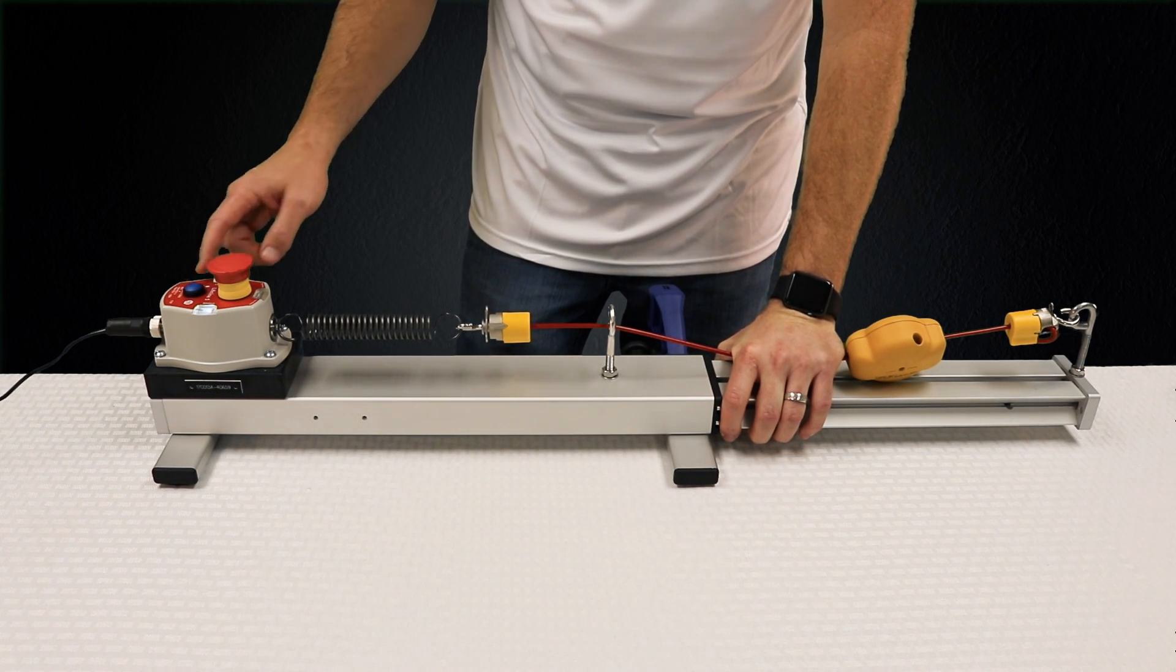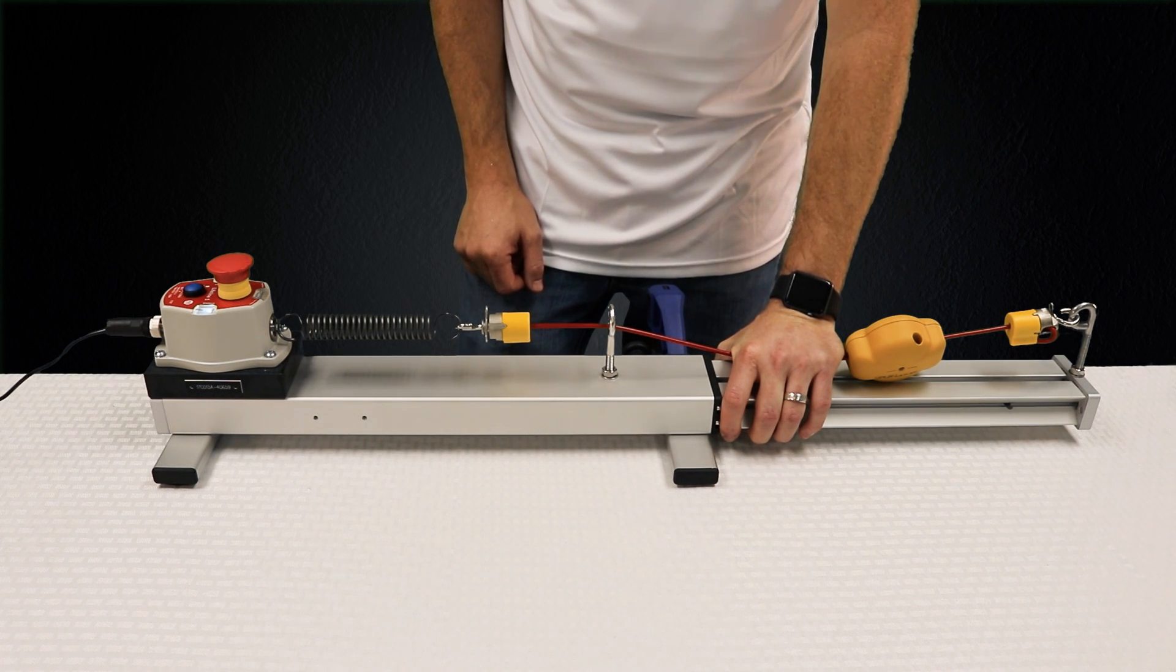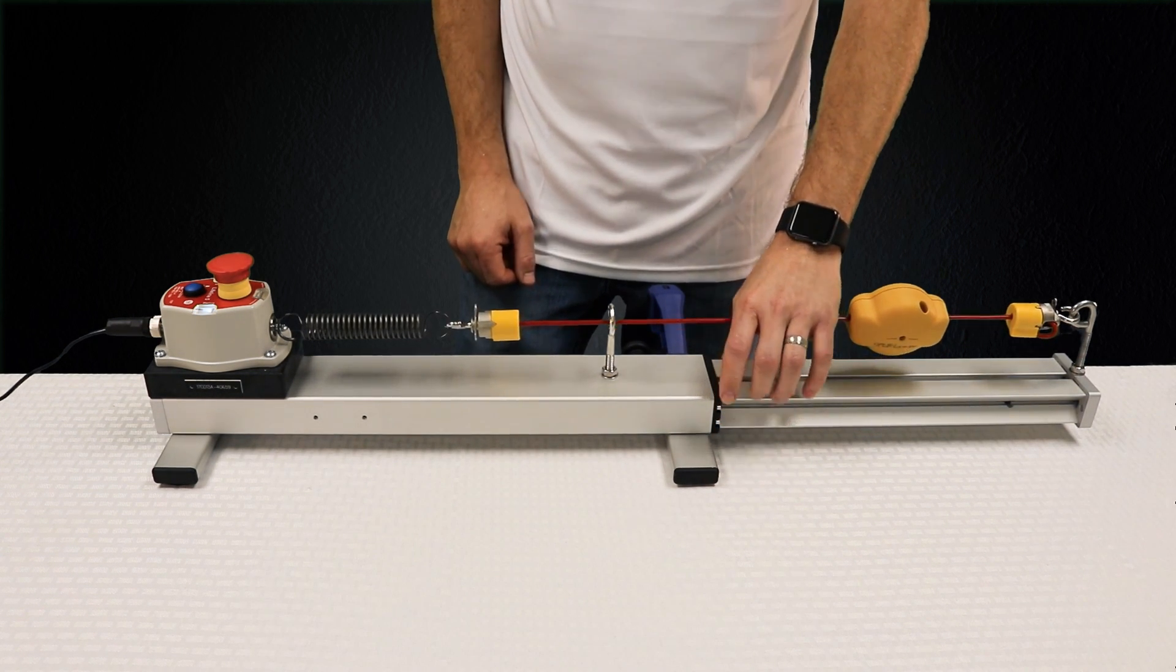The microprocessor is looking for a certain change in tension within a short duration, which classifies as a direct pull. If I pull on the cable quickly, it will stop.